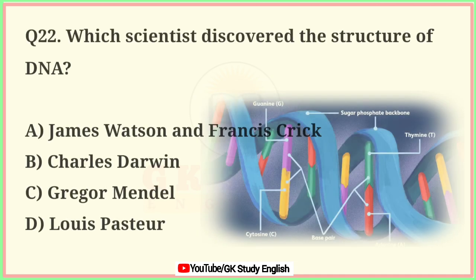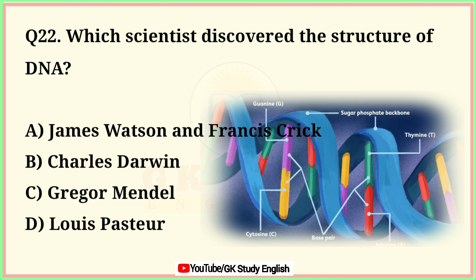Question number 22. Which scientists discovered the structure of DNA? A. James Watson and Francis Crick. B. Charles Darwin. C. Gregor Mendel. D. Louis Pasteur. Correct answer is option A. James Watson and Francis Crick.